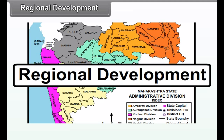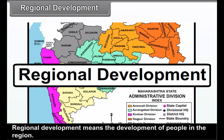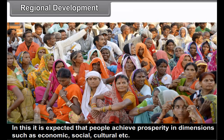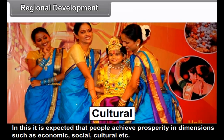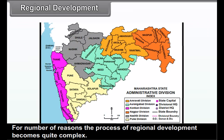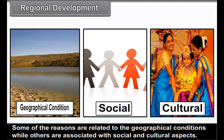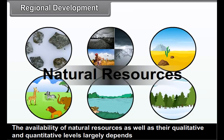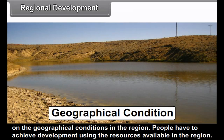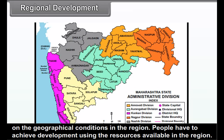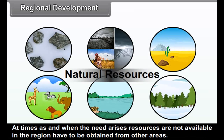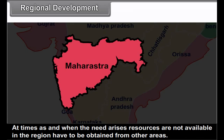8.2 Regional Development means the development of people in the region. It is expected that people achieve prosperity in dimensions such as economic, social, cultural, etc. For a number of reasons, the process of regional development becomes quite complex. Some reasons are related to geographical conditions, while others are associated with social and cultural aspects. The availability of natural resources, as well as their qualitative and quantitative levels, largely depend on the geographical conditions in the region. People have to achieve development using the resources available in the region, and at times, resources not available in the region have to be obtained from other areas.